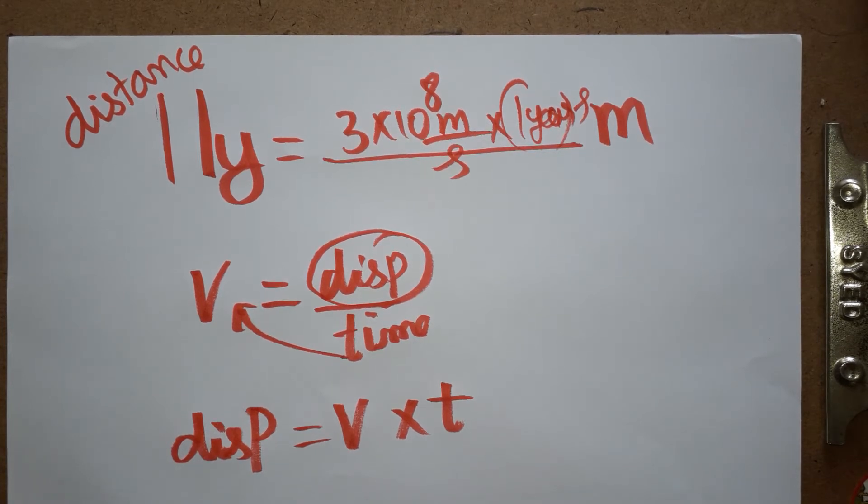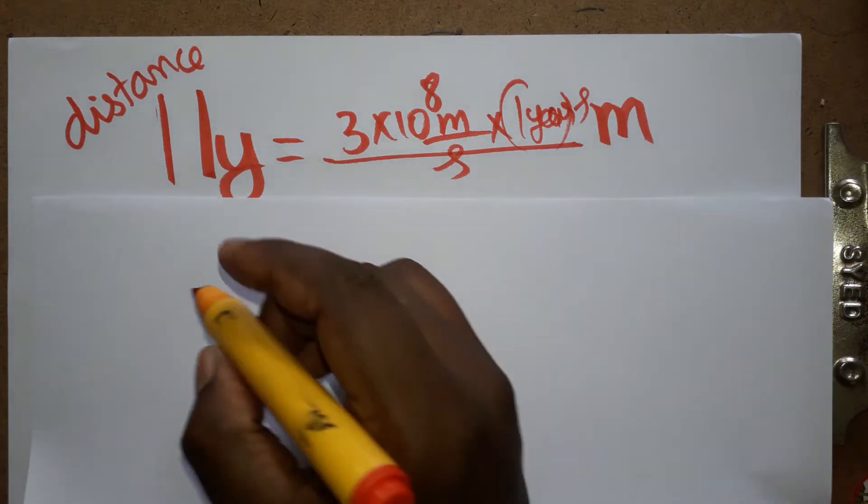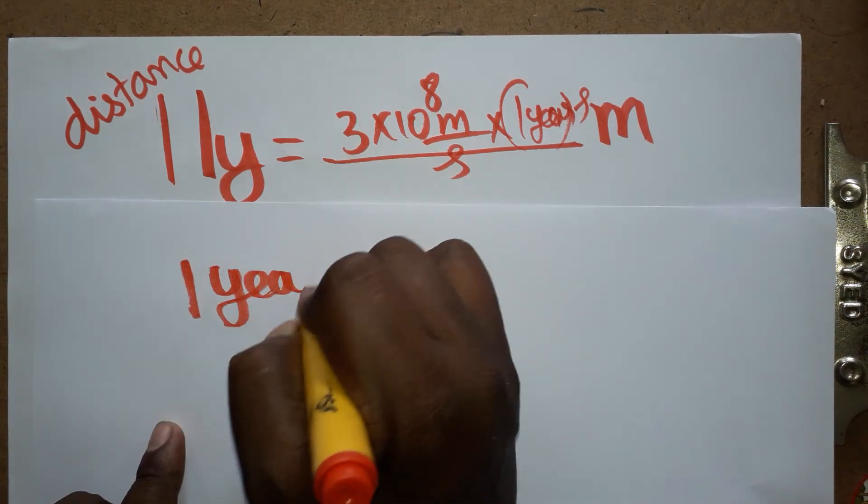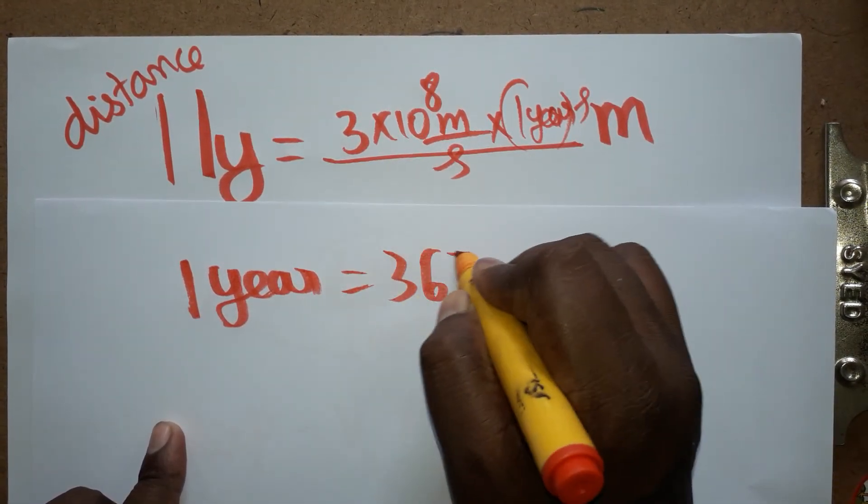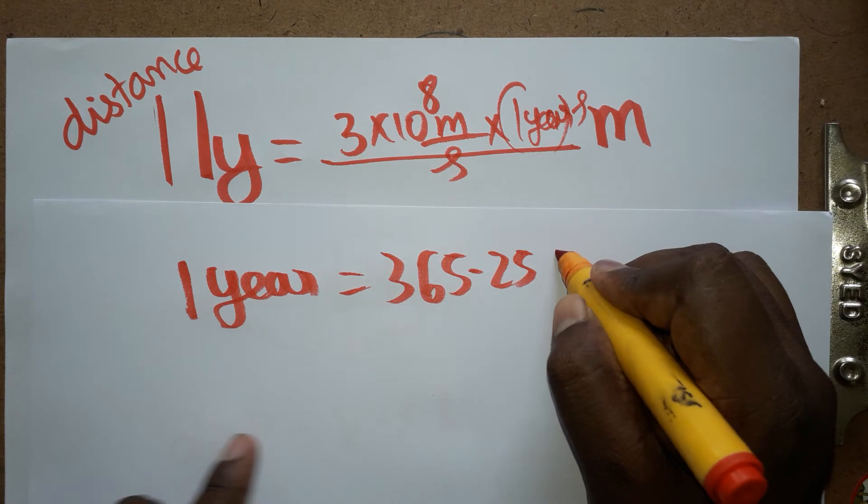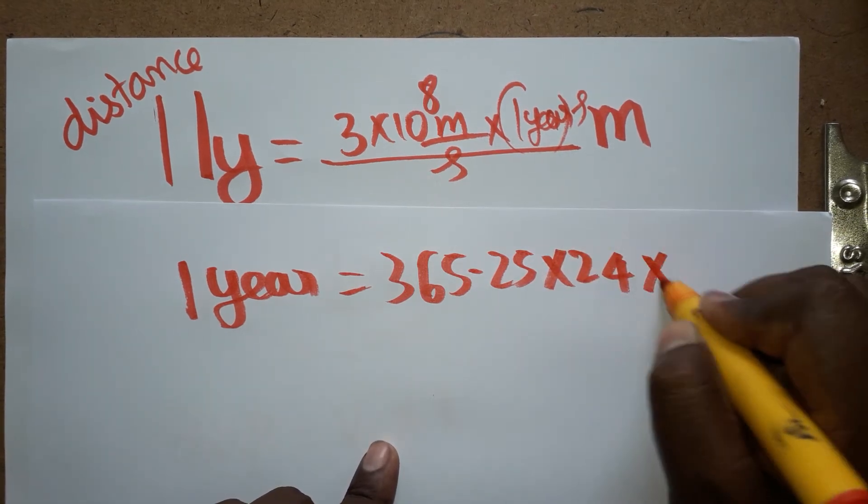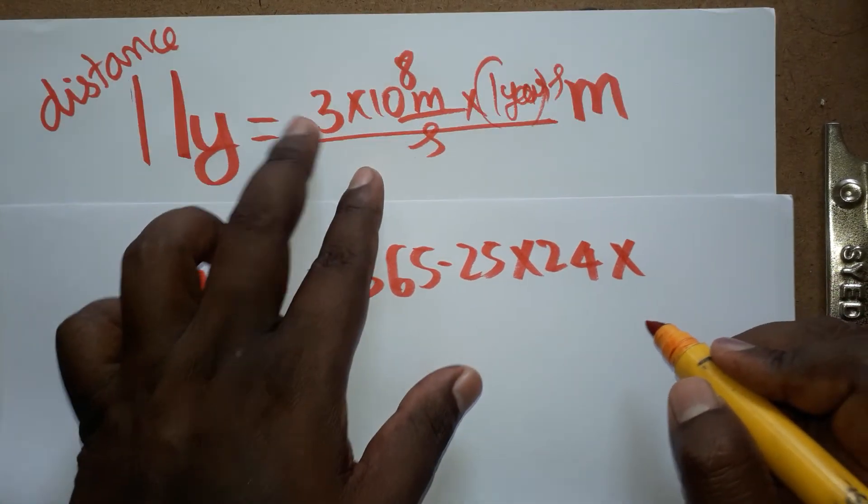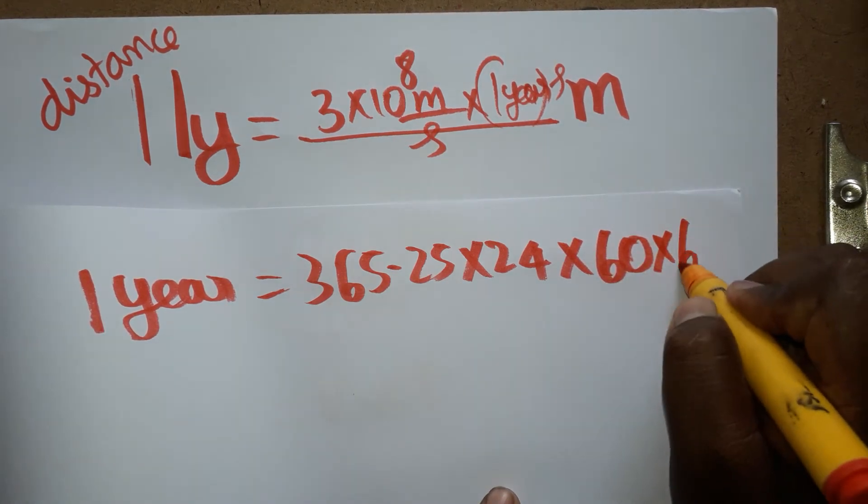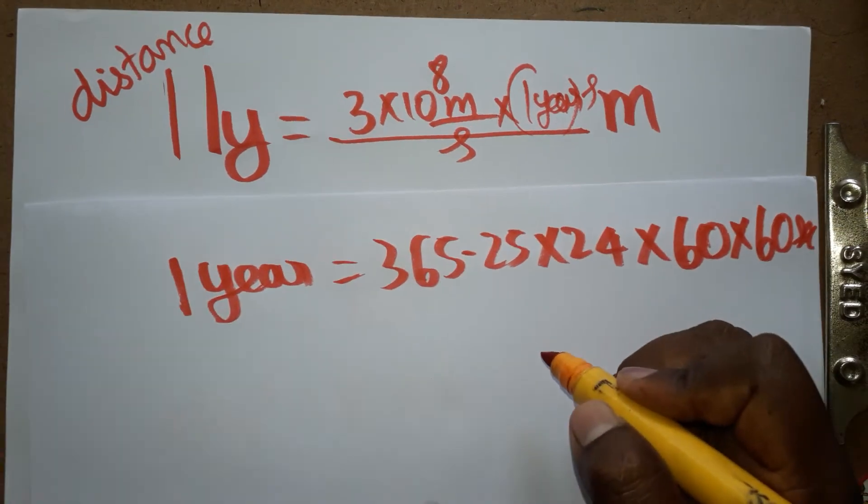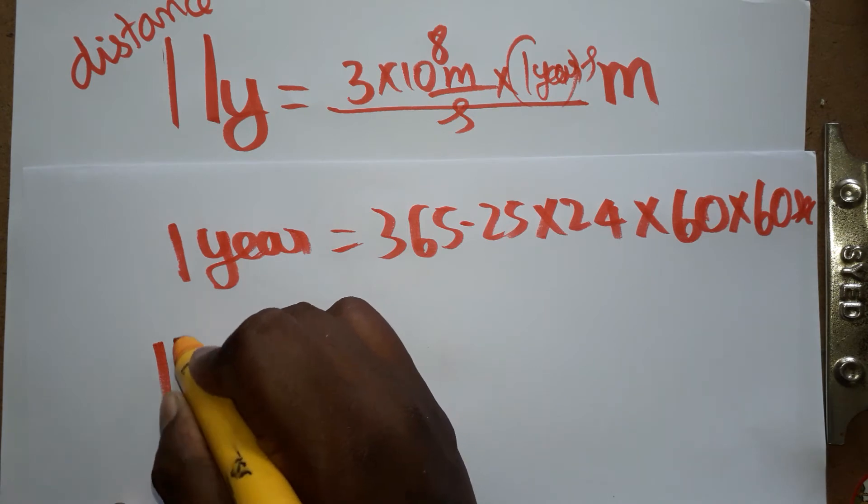One year equals how many seconds? One year is 365.25 days, per day is 24 hours, one hour is 60 minutes, and one minute is 60 seconds. So one year equals this many seconds total.